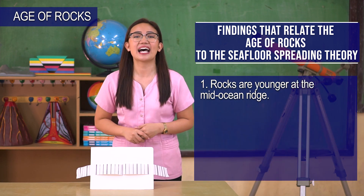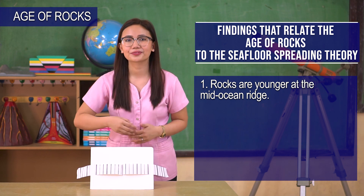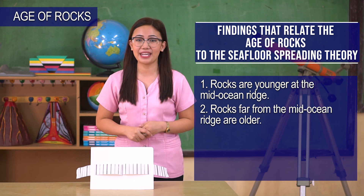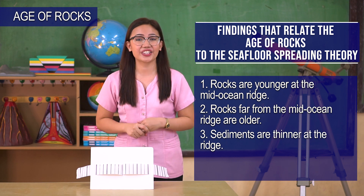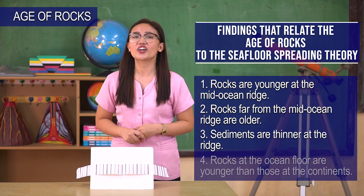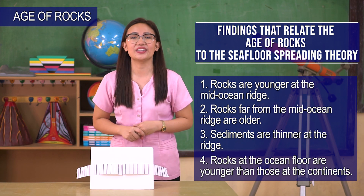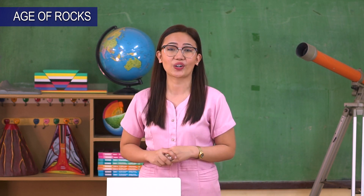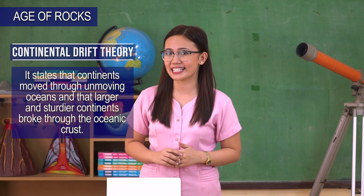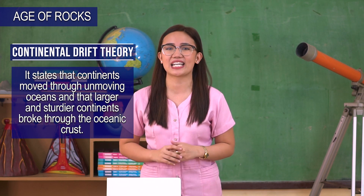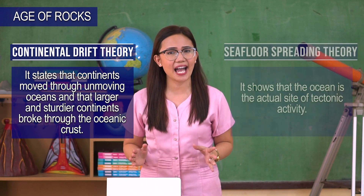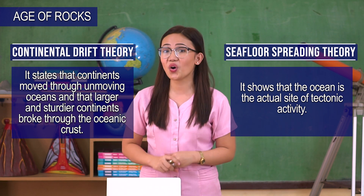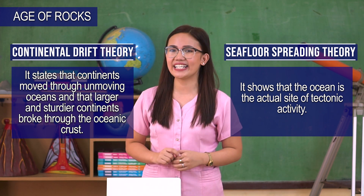These are the findings relating the age of rocks to seafloor spreading. First, rocks are younger at the mid-ocean ridge. Second, rocks far from the mid-ocean ridge are older. Third, sediments are thinner at the ridge. Lastly, rocks at the ocean floor are younger than those at the continents. The seafloor spreading theory also contradicts part of the continental drift theory — whereas the earlier theory said continents move through unmoving oceans, seafloor spreading shows that the ocean is the actual site of tectonic activity.